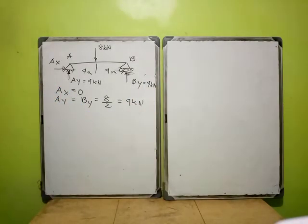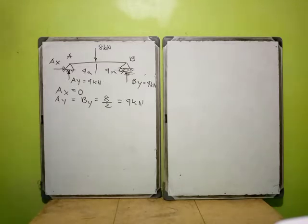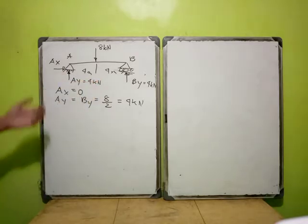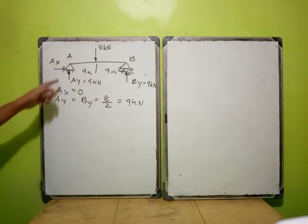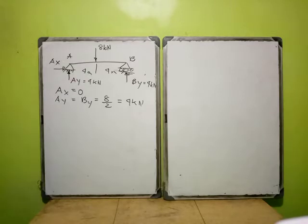So this is just a shortcut: if your beam is symmetric in nature, you can already determine the reactions directly — just divide the total load by two. AY and BY are equal, which is 4 kilonewtons.